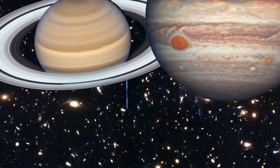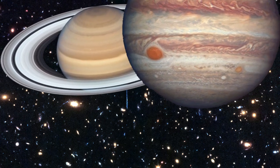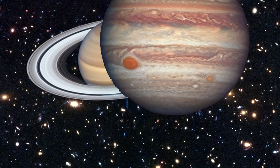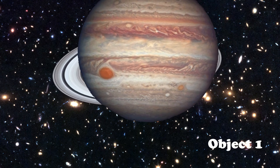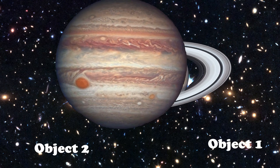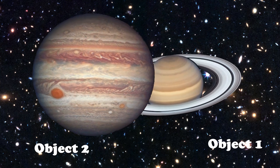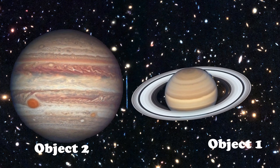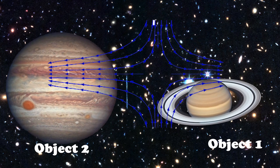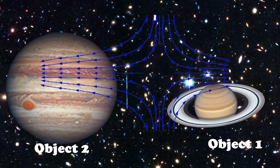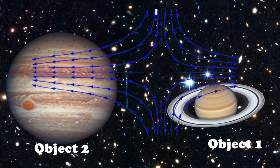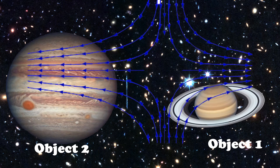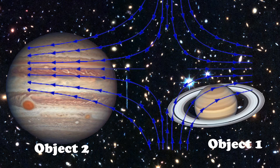To understand the concept of gravitational field, let's create a scenario consisting of two stellar objects: object one and object two. The region of space surrounding a body in which another body experiences a force of attraction is called gravitational field.